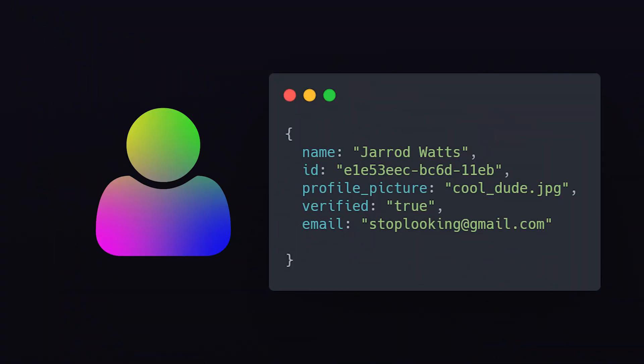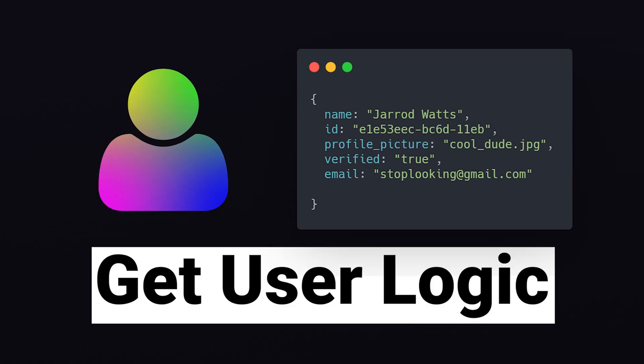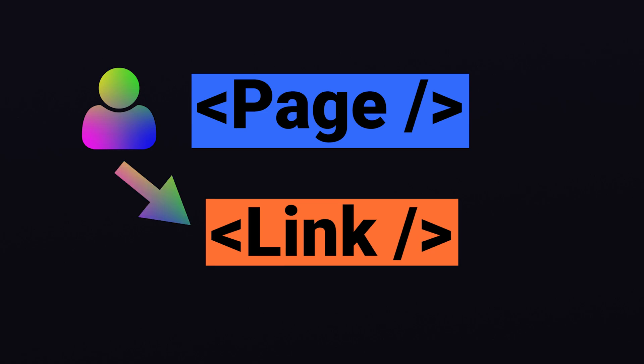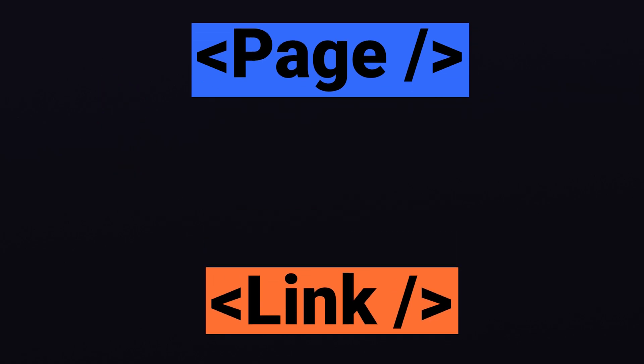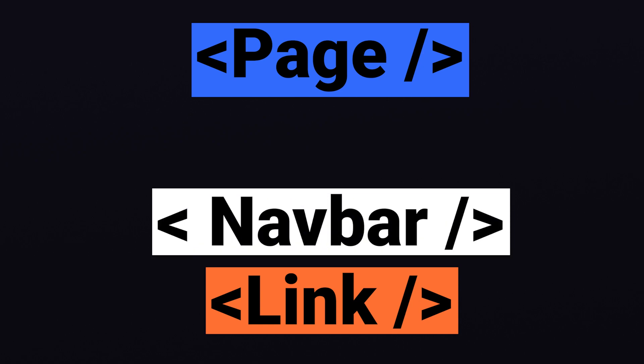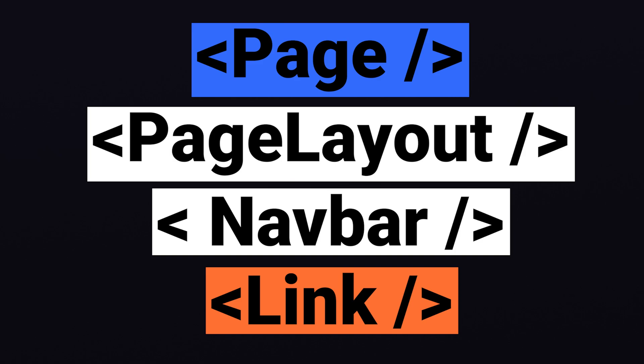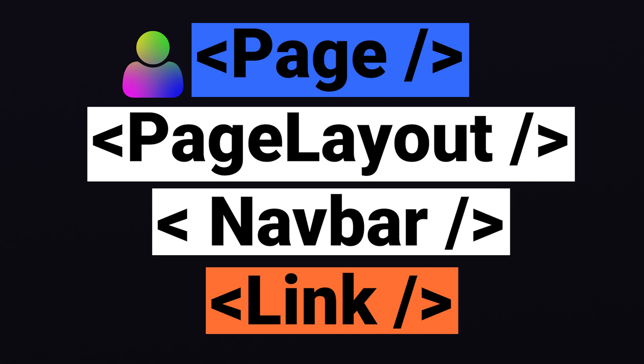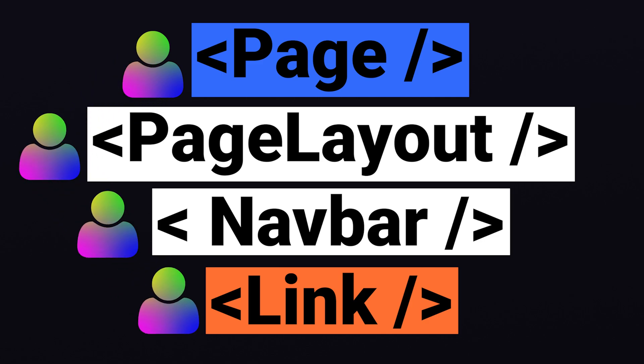To better understand why we might use React Context, let's look at an example of what life is like without the React Context API. Let's say we have some logic to get the current user in our parent component called Page. We also have a Link component that we'd like to access the user's information in. But there's a catch — the Link component lives within the Navbar component, and the Navbar component lives within the PageLayout component. In order for the Link to access the user, we'll have to pass it down the hierarchy as props. This is not only annoying to implement, but the PageLayout and Navbar components might not even need to access the user — they only need to pass it down so that the Link component can access it.